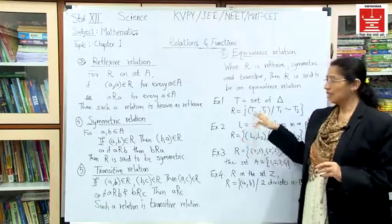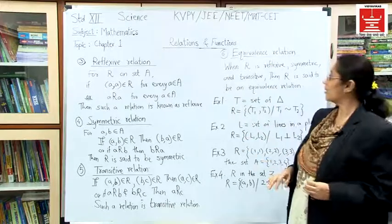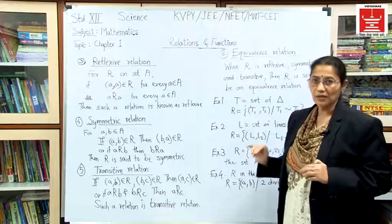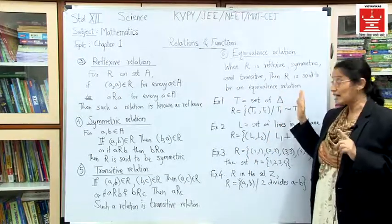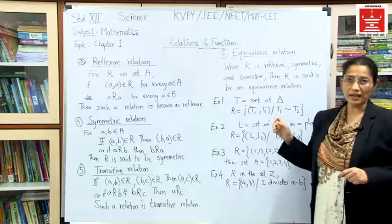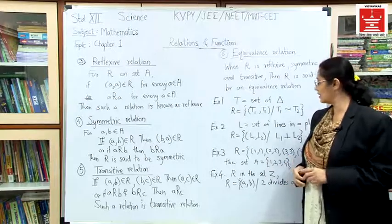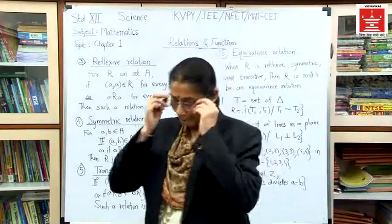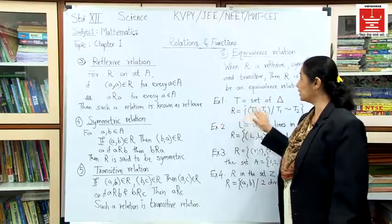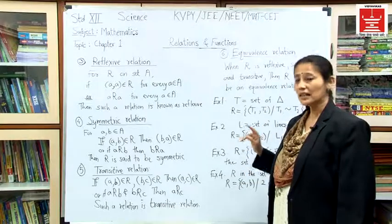This particular relation is transitive. Now for the equivalence relation: if the relation is reflexive, symmetric, and transitive, then we call it an equivalence relation. The similarity between triangles satisfies all three properties, so the similarity relation on triangles is an equivalence relation. Example 1 is an example of an equivalence relation.